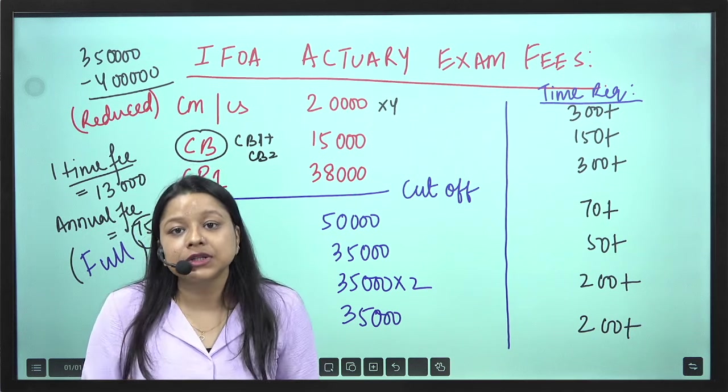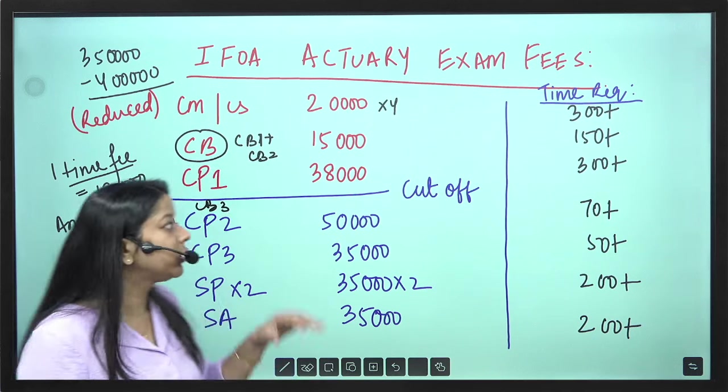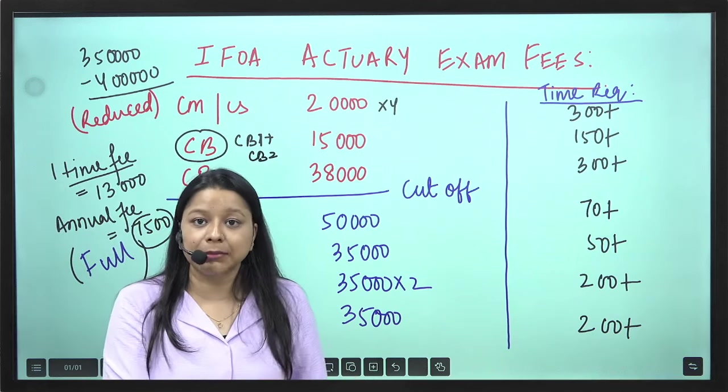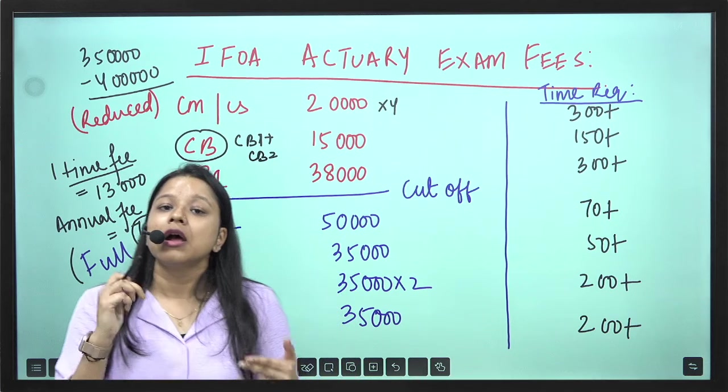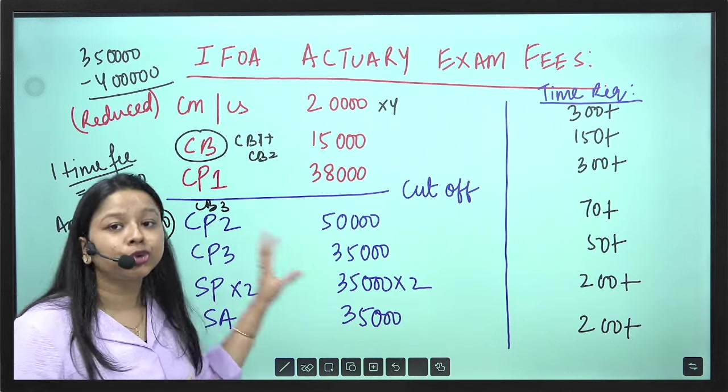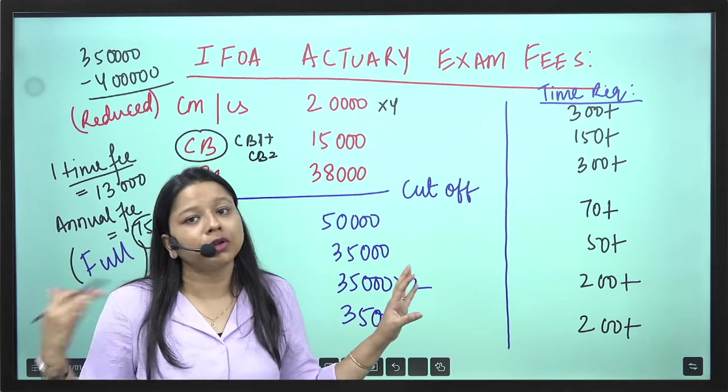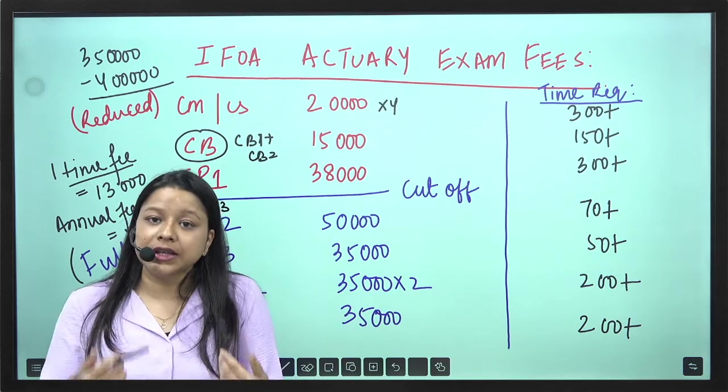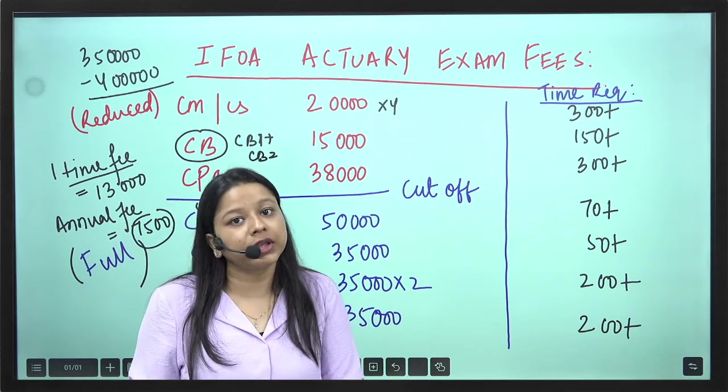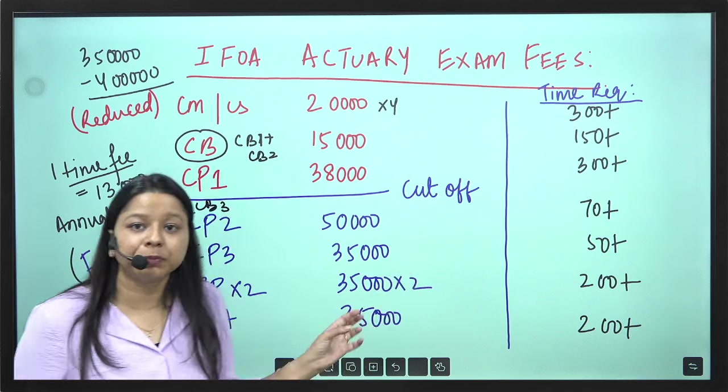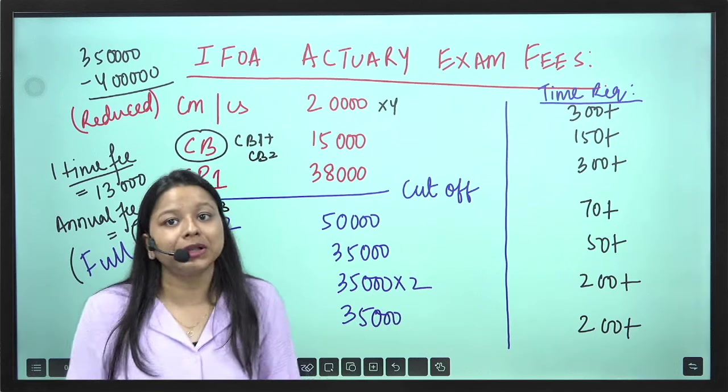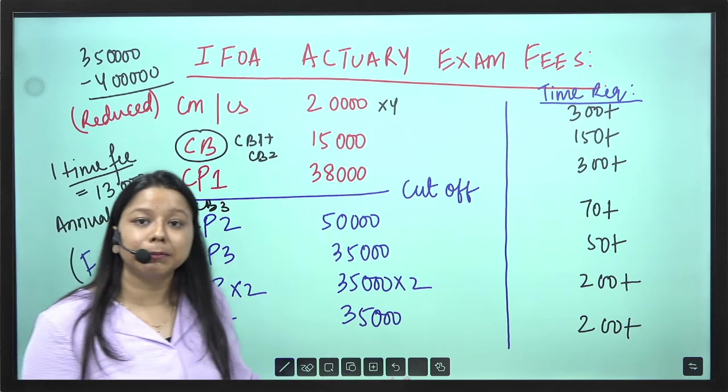Some companies will reimburse you once you clear your examination. So it is a one-time reimbursement. For example, I am sitting for CP2. I am not able to clear it. They will not reimburse. Second time when I sit and clear, they will reimburse. Some companies will reimburse you up till 3 terms. So they reimburse you 3 times for each paper. So depending on whatever the company policy, if you are studying properly, all these fees will be reimbursed by your company.